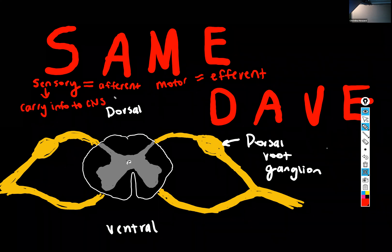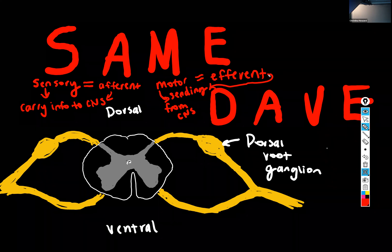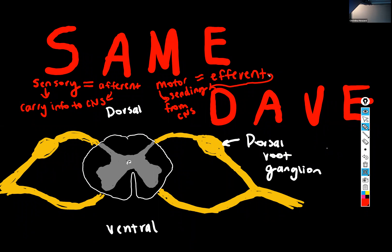Motor equals efferent, meaning sending. We typically think of motor neurons as being ones that direct skeletal muscle, but of course they also direct the action of smooth muscle, cardiac muscle, and sweat glands and other kinds of glands as well as adipose tissue. The somatic nervous system effector is skeletal muscle and skeletal muscle only. The autonomic nervous system effectors are the other ones that I listed.